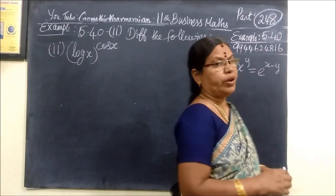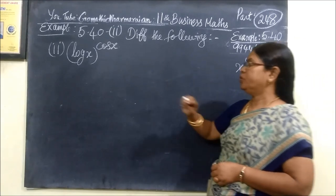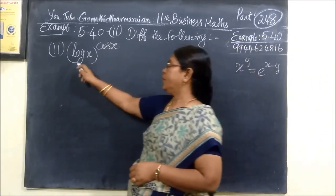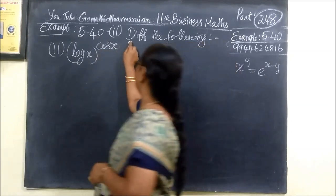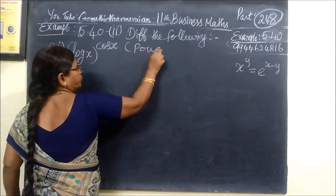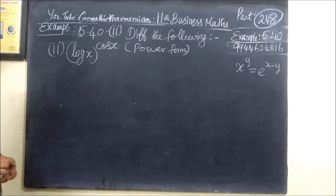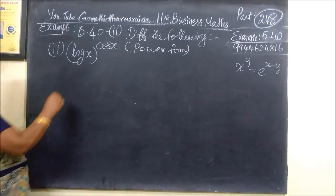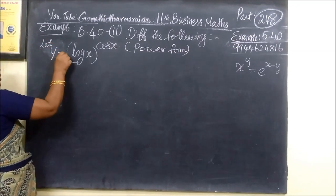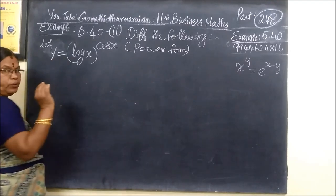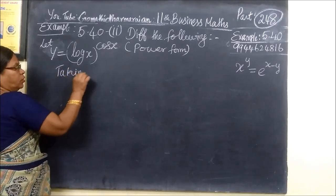So now question number 5.4, theater. The road is subdivision 2. Even this, we are taking logarithmic form on both sides, because it is in proper form. We are taking log on both sides, we are taking logarithmic form on both sides.